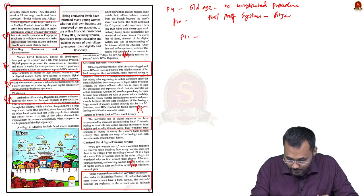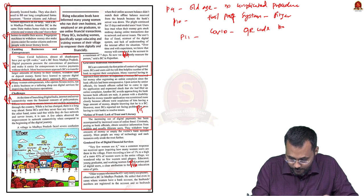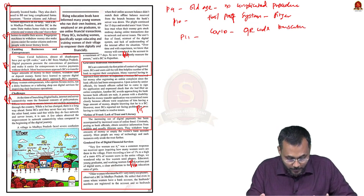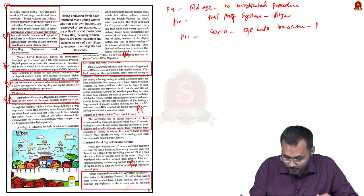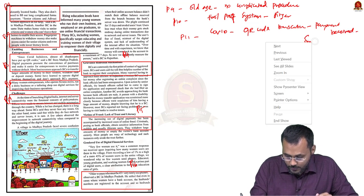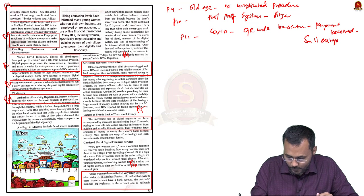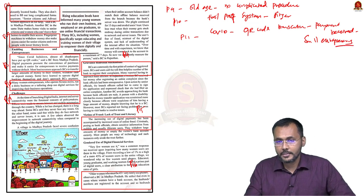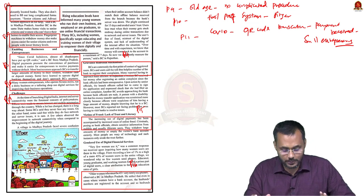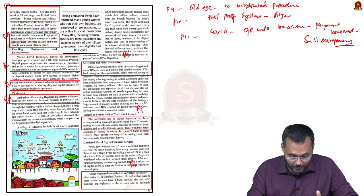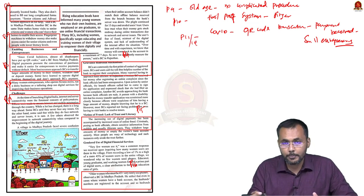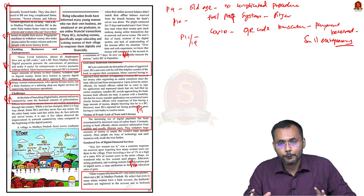During COVID, QR code-based transactions helped a lot to stop the spread of the virus. Payment received especially for small entrepreneurs was facilitated digitally. Banking correspondents with QR-enabled transactions helped maintain physical distance to stop the pandemic and block the chain of spread.